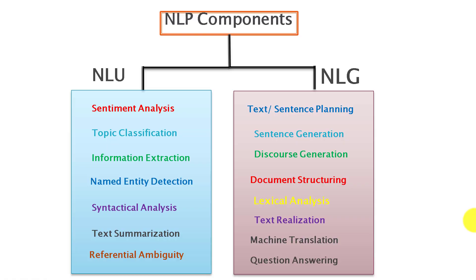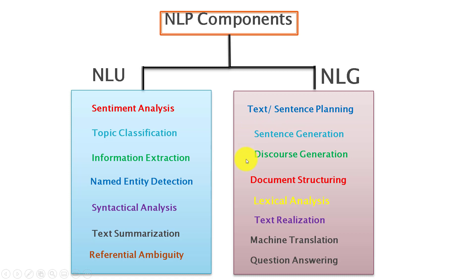This slide shows the components of NLP in a bit more detail. Since there are two components — NLU and NLG — both involve various types of tasks. Under NLU, the tasks include: sentiment analysis, topic classification, information extraction, named entity recognition, syntactical analysis, text summarization, and referential integrity. NLG involves tasks such as: sentence planning, sentence generation, discourse generation, document structuring, lexical analysis, text realization, and machine translation.